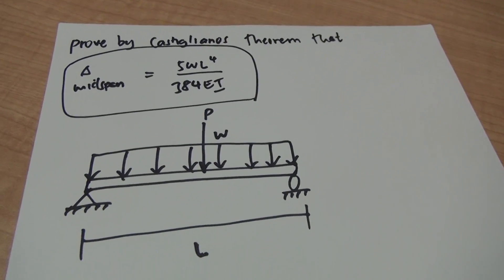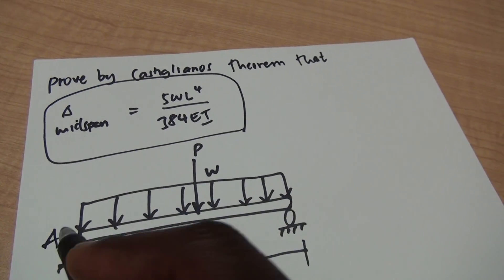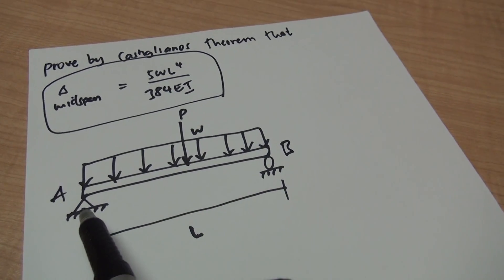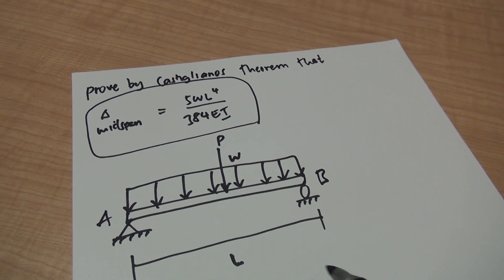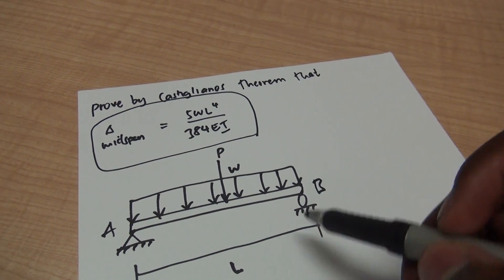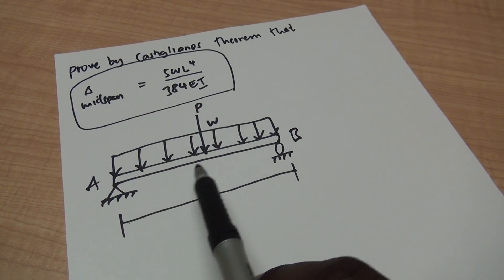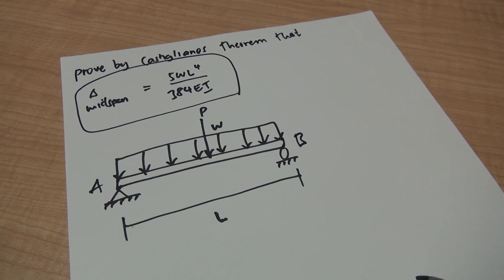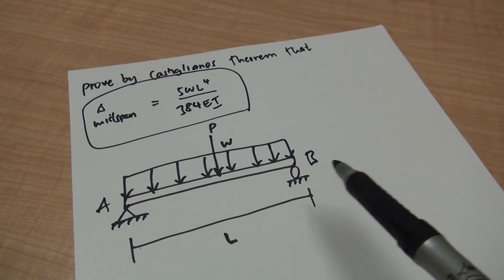Right here in front of me I have a beam — that is point A and that is point B. We have a pin support here and we have a roller support here. A roller support produces a vertical force, and a pin support produces both a horizontal force and a vertical force, but in this case the horizontal force is just going to be zero. Castigliano's theorem basically says that where you want to find deflection, just insert an unknown force P.